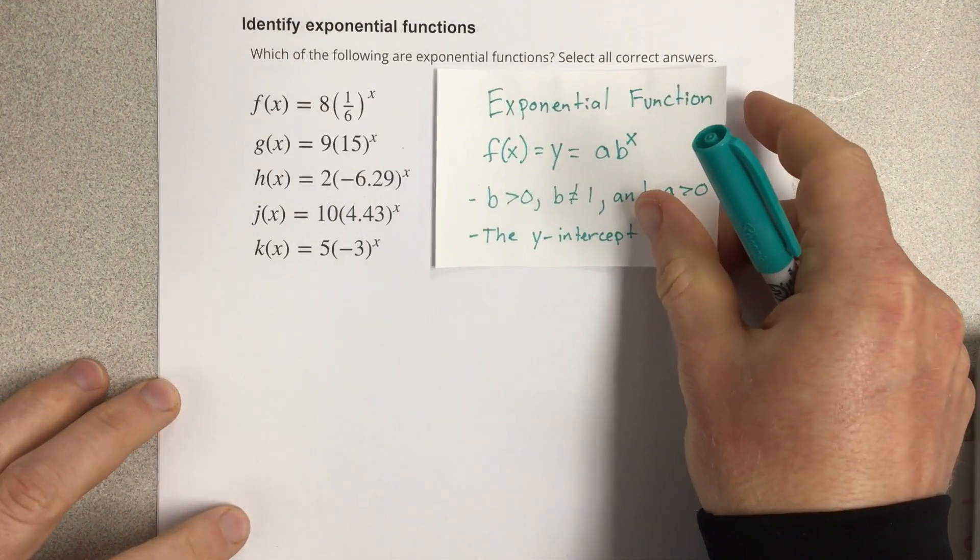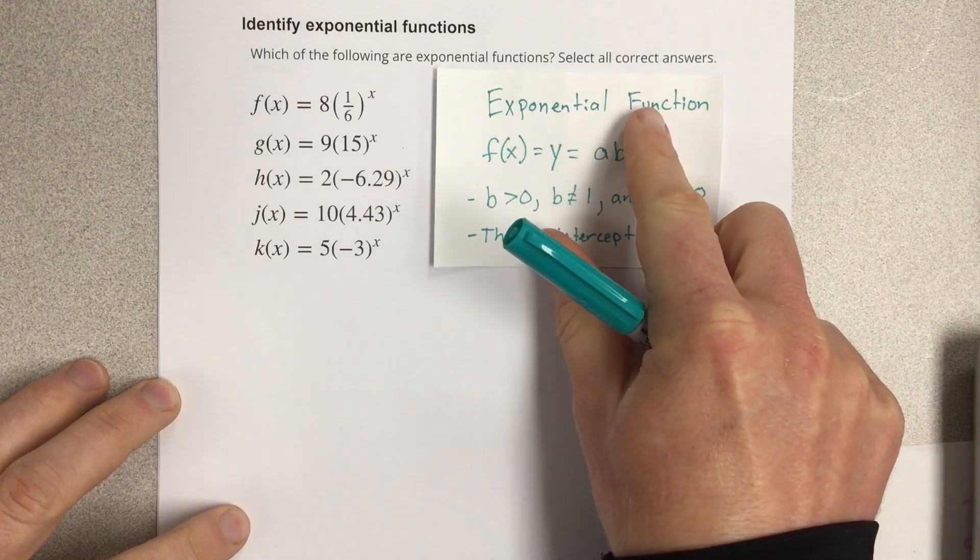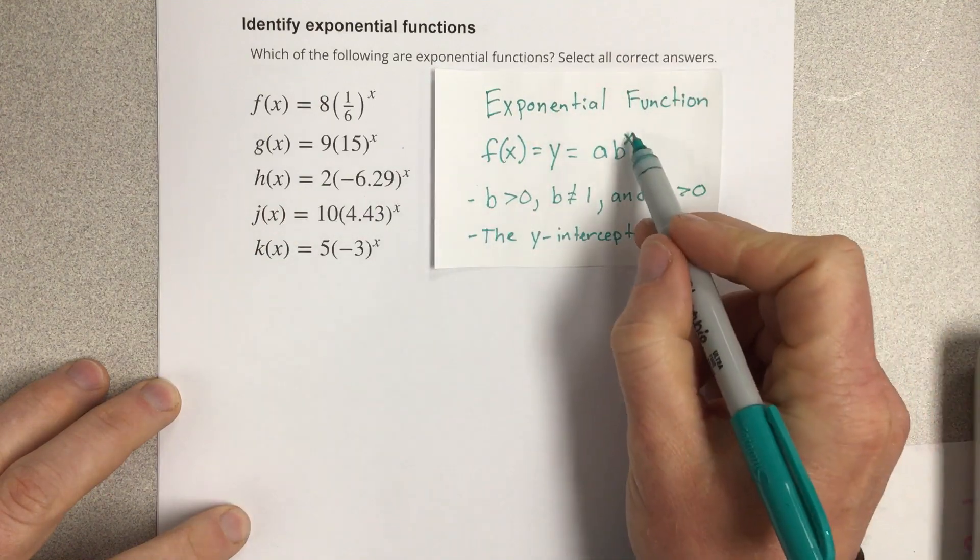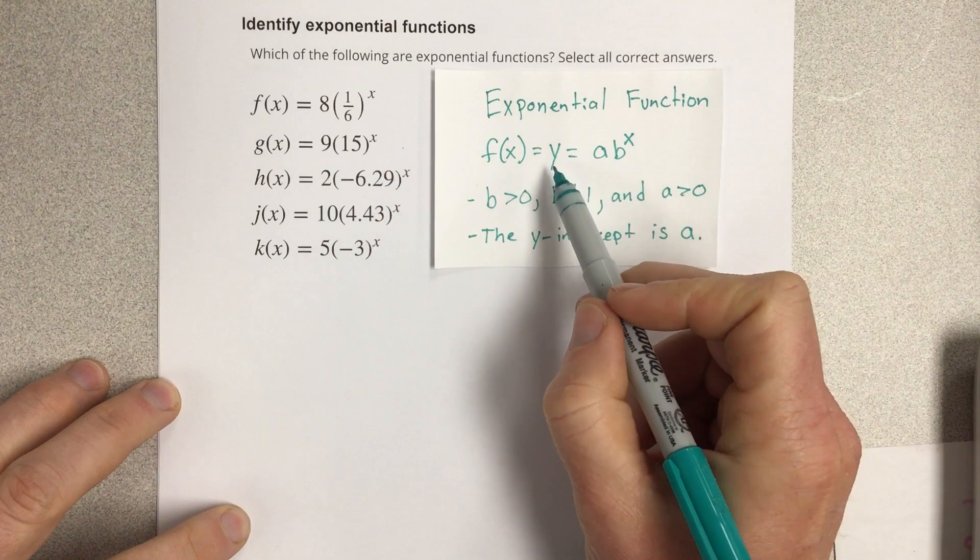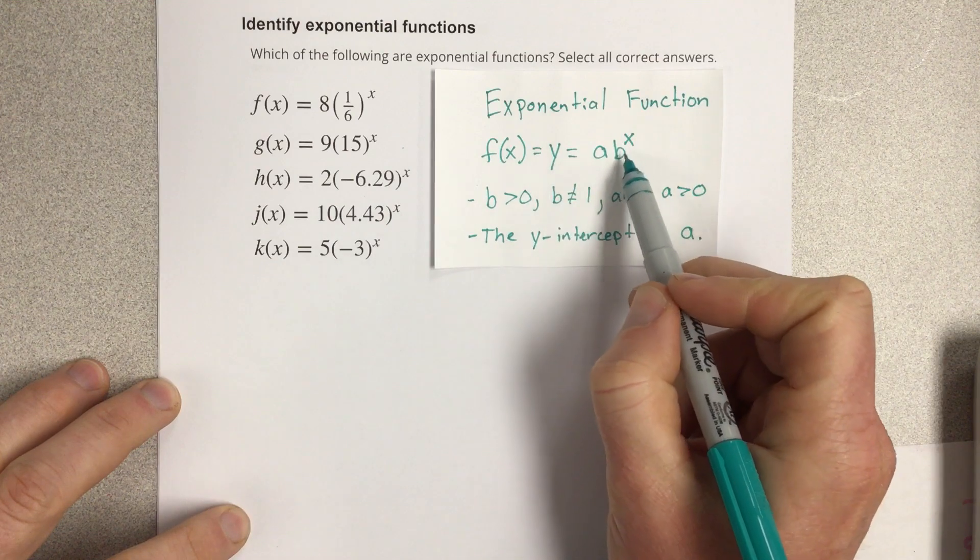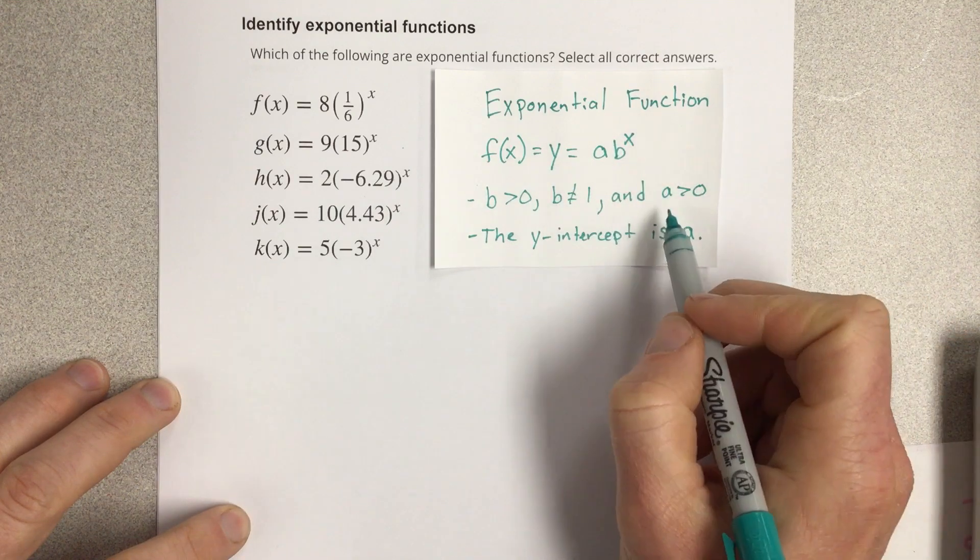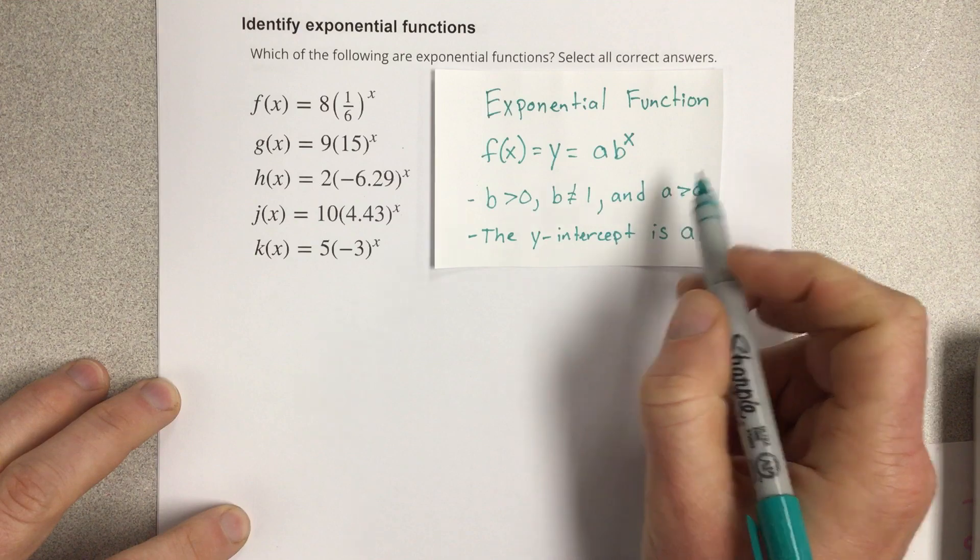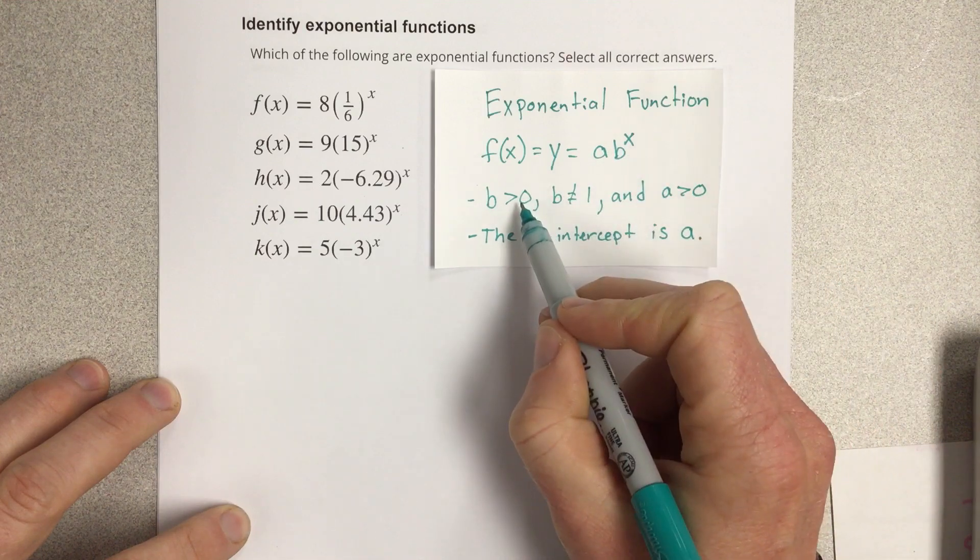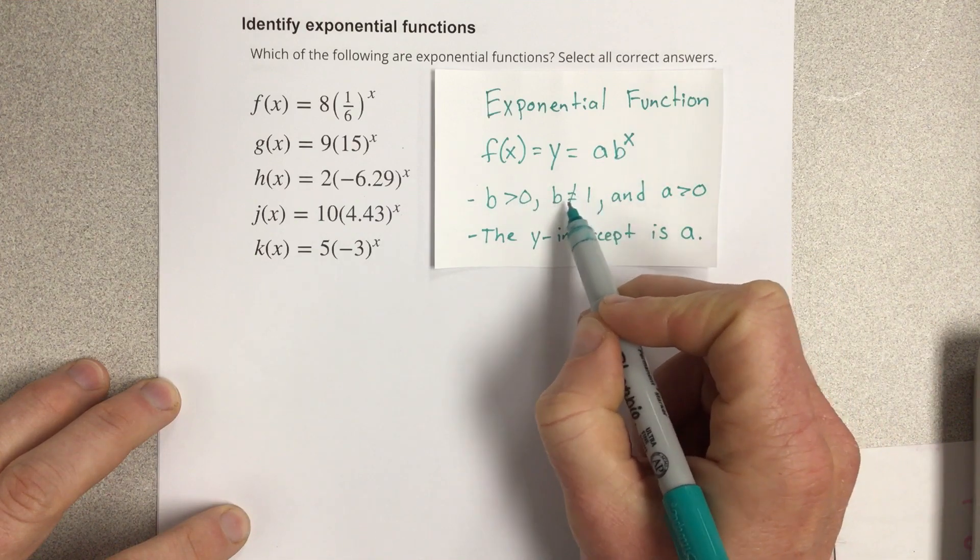Let's take a look at what an exponential function is. An exponential function is when you have a variable in the exponent and it's written y equals a b to the x power, where a has to be greater than zero, b has to be greater than zero, but b cannot equal one either.